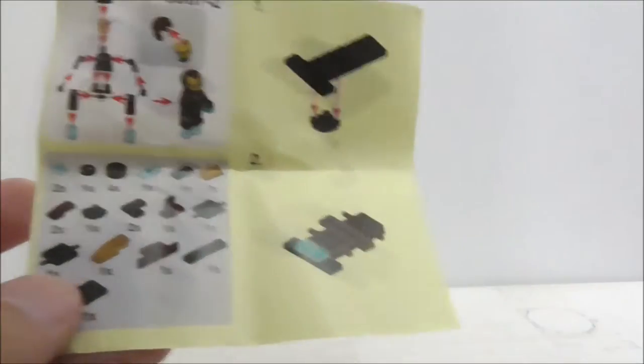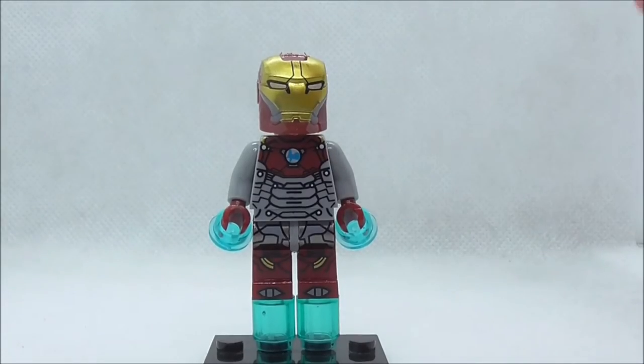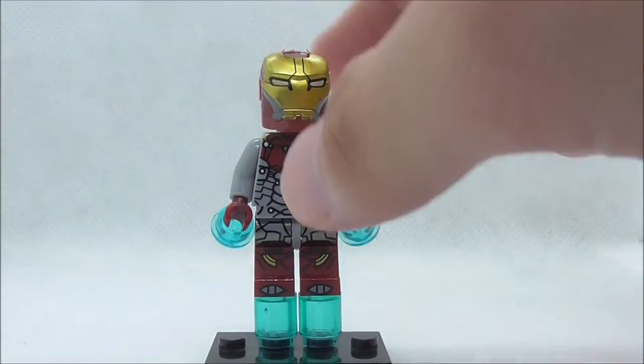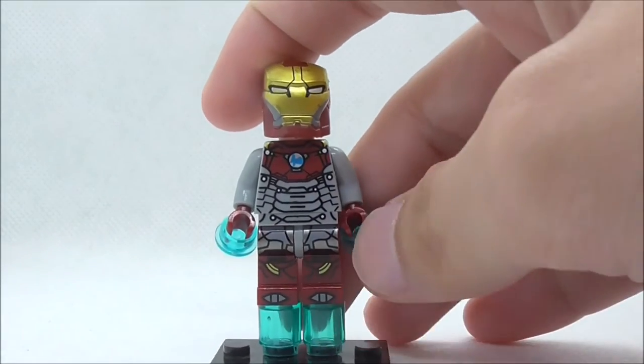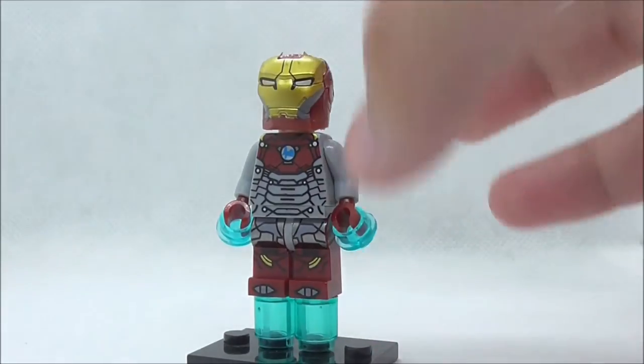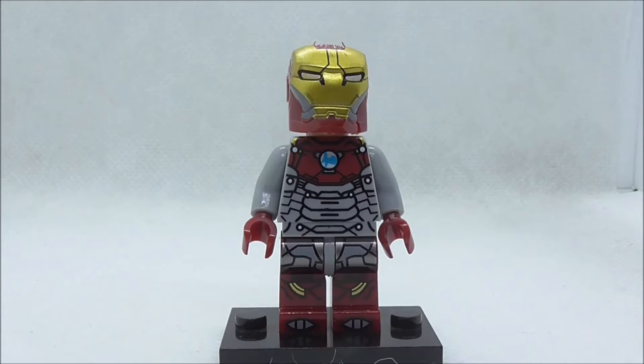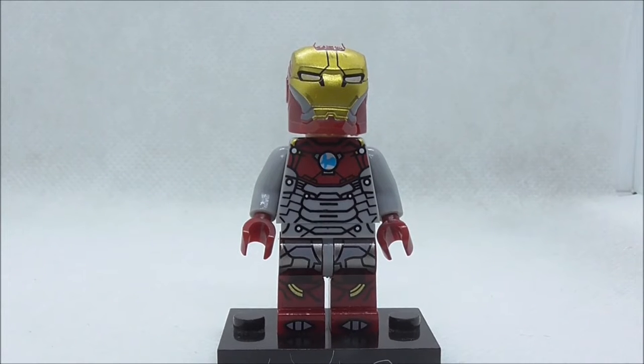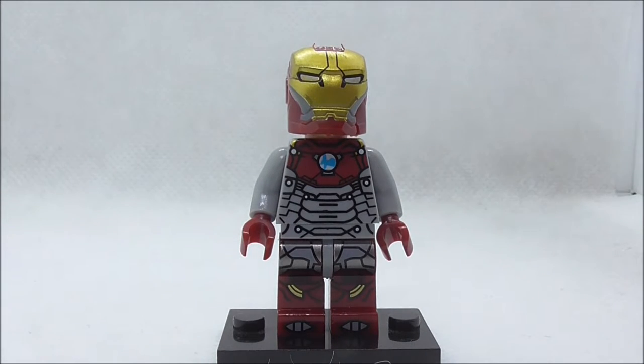This is Iron Man itself right here. He comes with the studs and the cylinder pieces in translucent blue to represent him flying. Let's remove them. This is the figure without the translucent blue pieces.